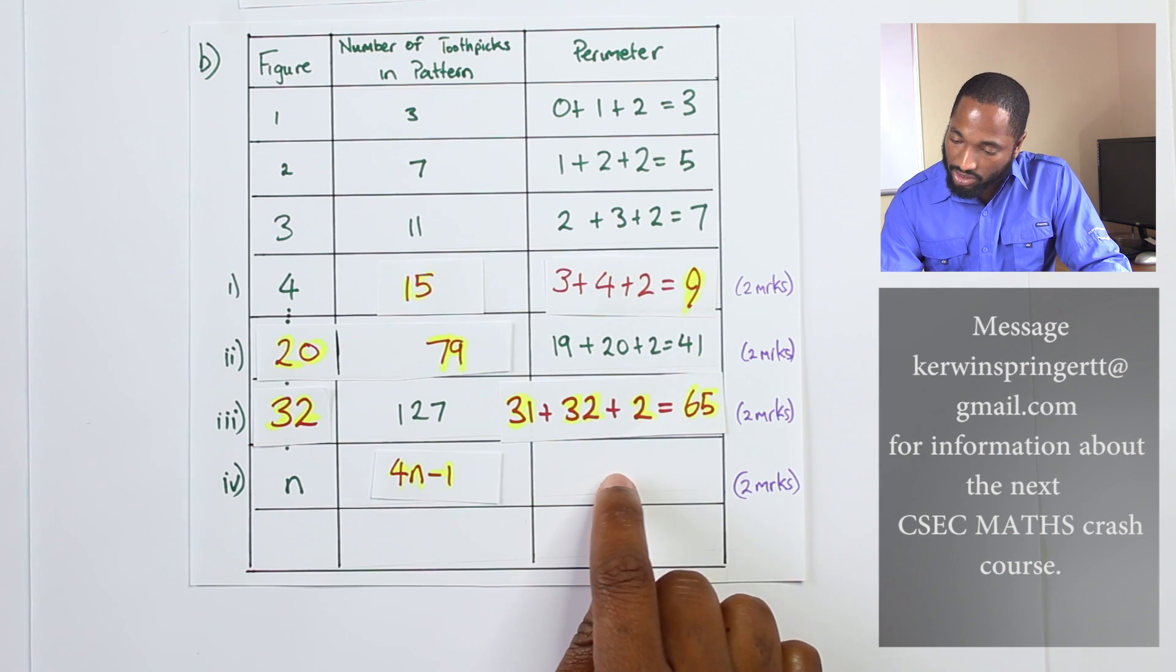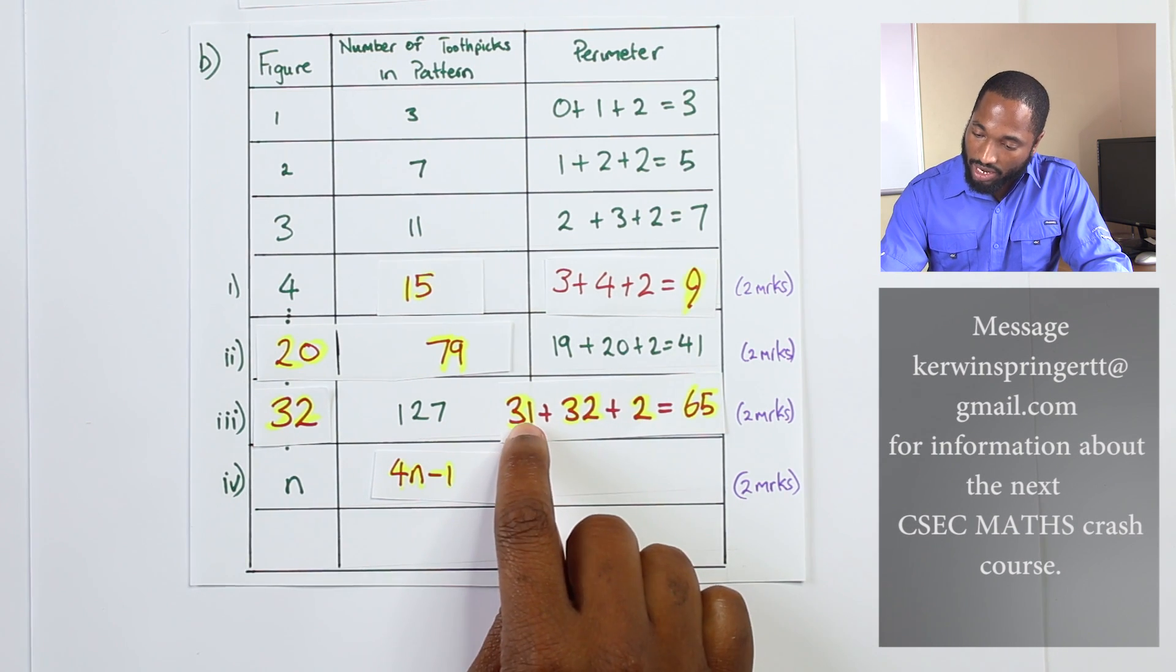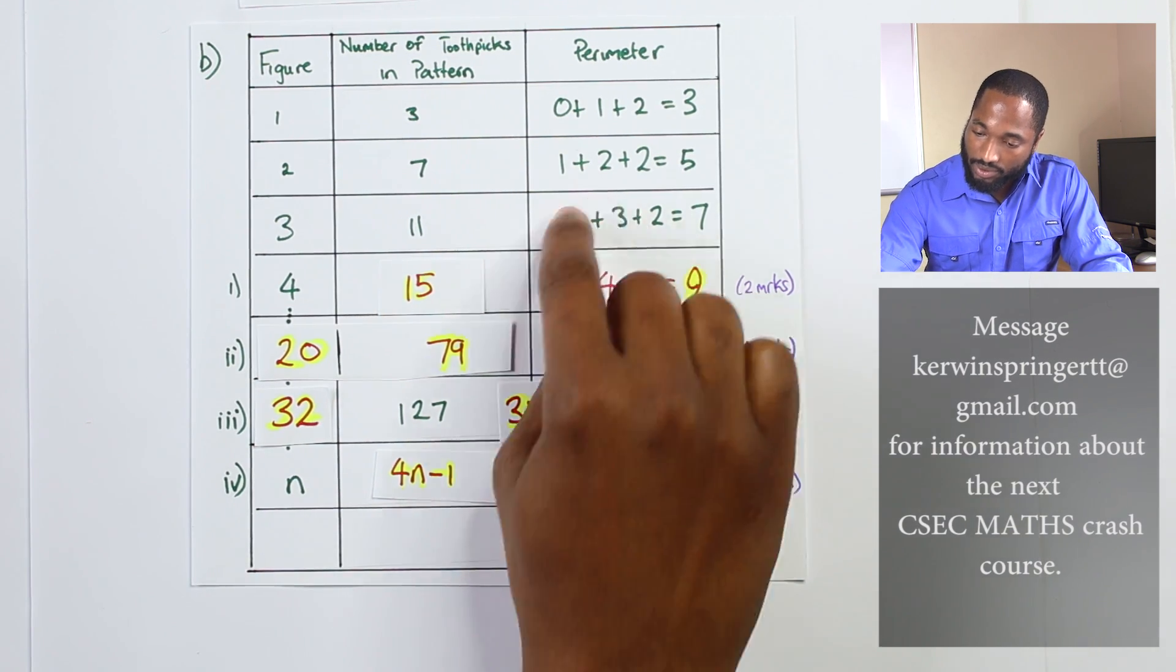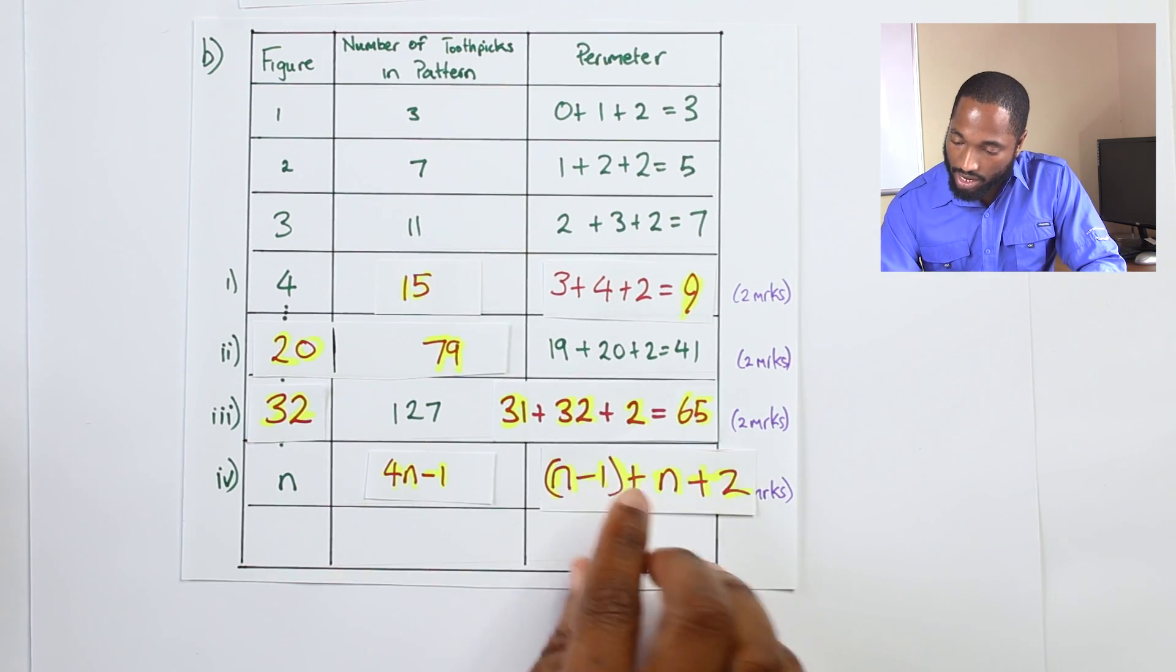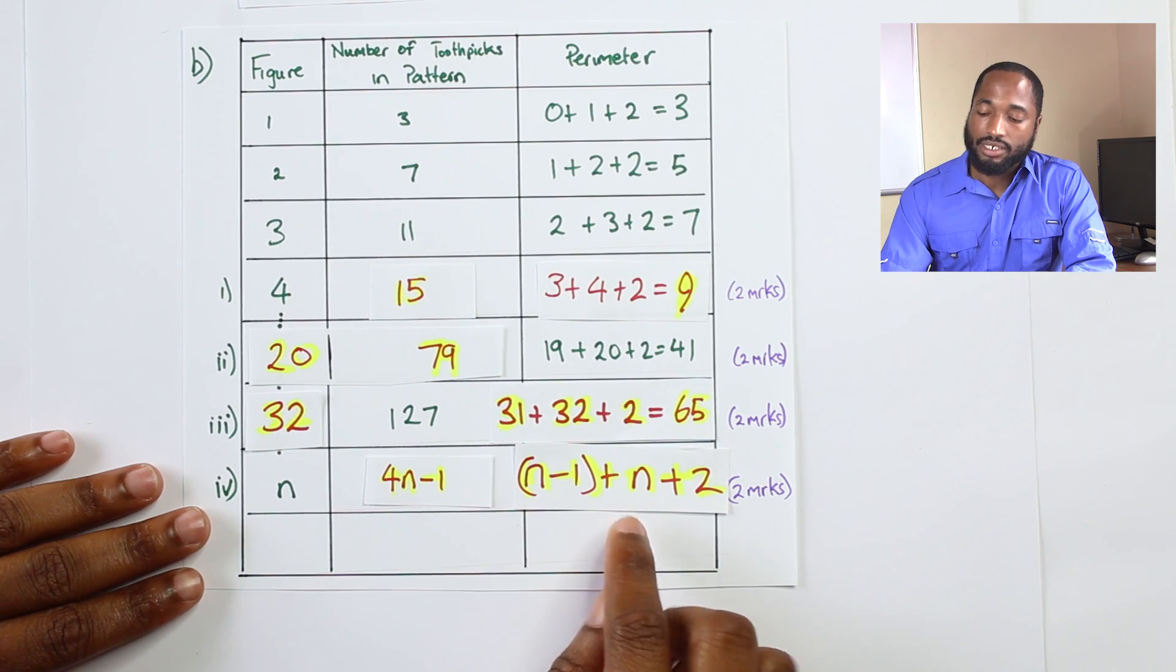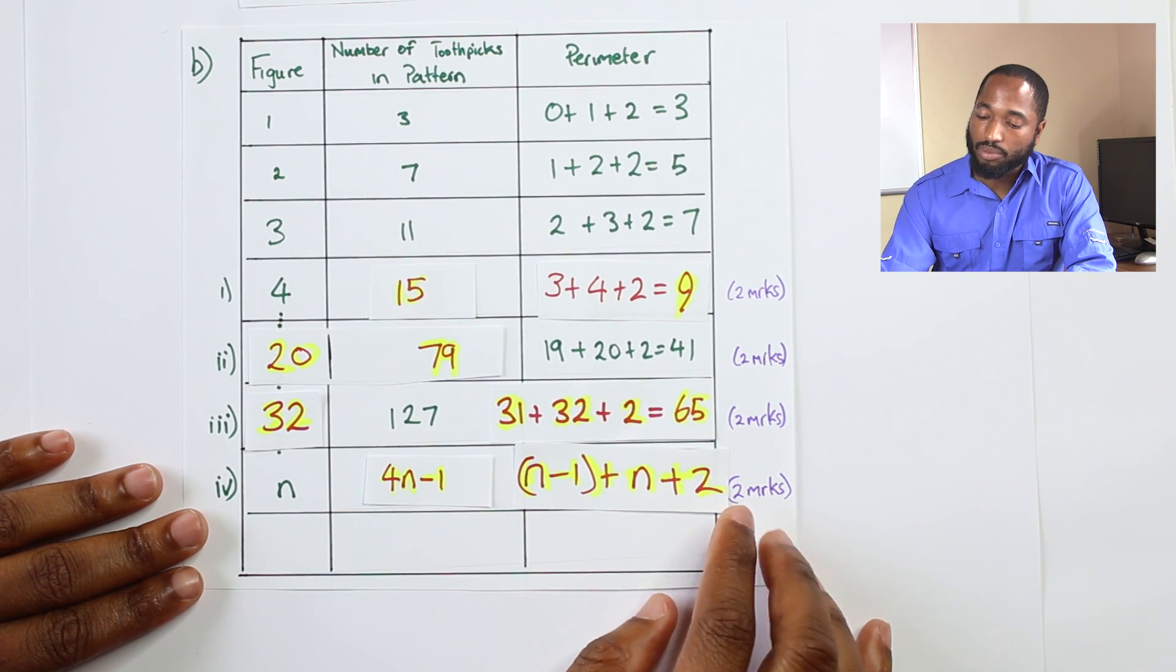Well, n goes in the center. This is one less than n all the time, and the number on the outside is always going to be two. So that is it. Upside down, that is going to be like this, so n minus 1 plus n plus 2.